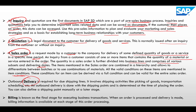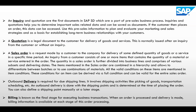In SAP SD, delivery is referred to as outbound delivery, which is required for all shipping activities including picking of goods, transportation, and scheduling. Outbound delivery is done with a shipping point determined at the time of placing the order, though you can also define the shipping point manually when creating the delivery document.